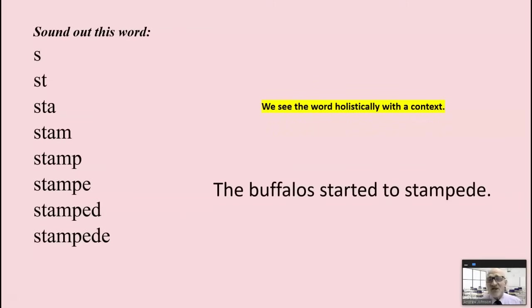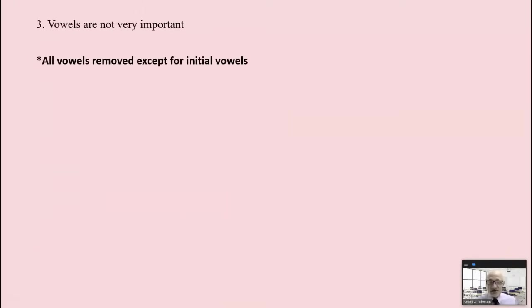According to the phonological model, you'd process individual letters, you'd see a word, you'd go, s-st-st-st-st-st-ah-st-ah-st-ah-stam. Oh, it's a stamp. Stamp. Yes. Stamp. Stampy. Oh, it's stamped. Yes, it's stamped. Stampede. Ah, stampede. Rather we don't see individual letters. We see the word holistically within the context of the sentence. The buffalo started to stampede. We are using buffaloes and started, and we just need to just kind of blip on stampede to see that it is a word, to recognize that word while we're reading.